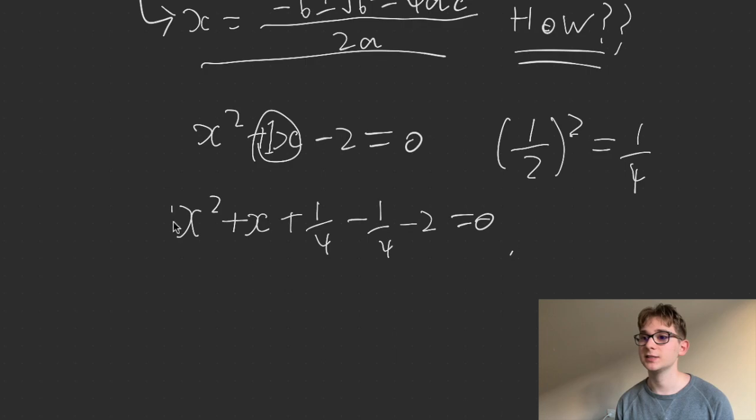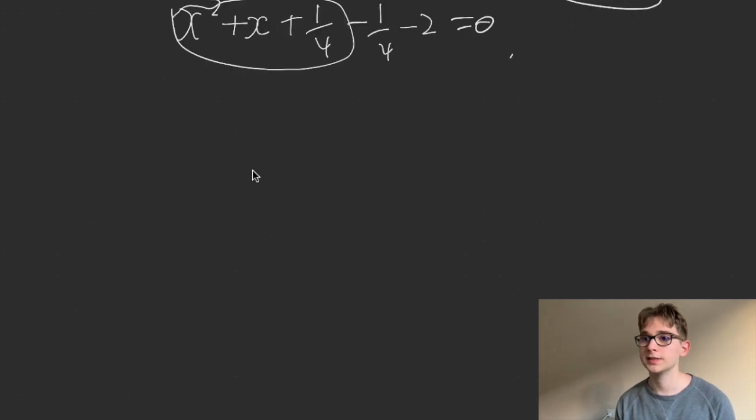plus 1 quarter minus 1 quarter minus 2 equals 0. And then we can use this fact here because we know this is a perfect square. So then we know that this is going to be x plus 1 half to the power of 2.